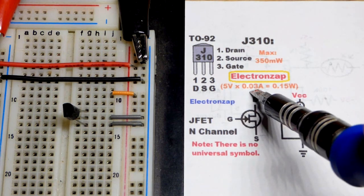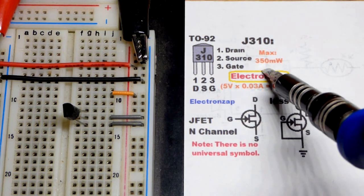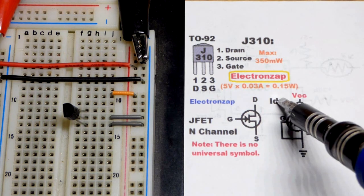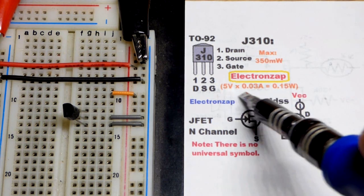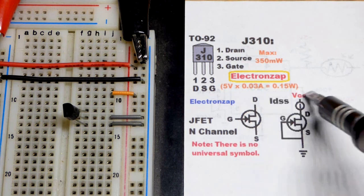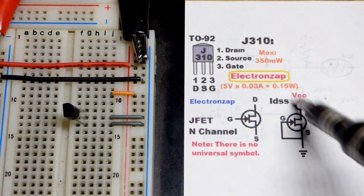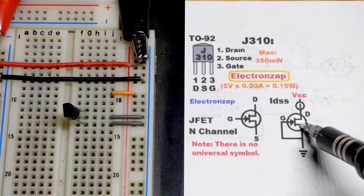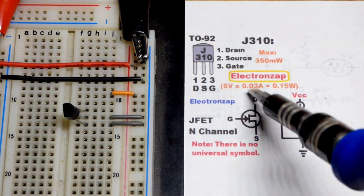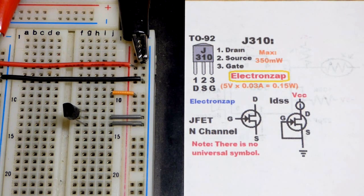Now we have a wattage there, 350 milliwatt maximum. And so if we go to five volts and 30 milliamps goes through, that'll bring us to 0.15 watts, which is about half of the maximum wattage. So we're going to watch our voltage and current to make sure we don't exceed that wattage by very much.